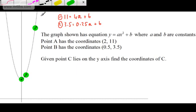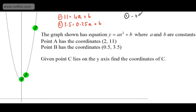So what I'm going to do from here is simply now do 1 minus 2. So if I do 1 minus 2, I'm going to have 11 minus the 3.5, which is going to give me 7.5. If I subtract 4a and subtract away 0.25a, I'm going to get 3.75a. If I now subtract b from b, that's going to leave me 0.